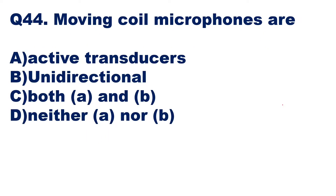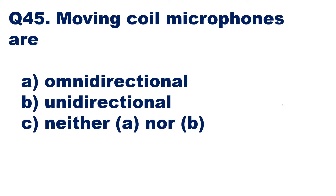Question 44: moving coil microphones are — options are active transducer, unidirectional, both active and unidirectional, or neither. It comes under the category of active transducer which converts sound into electrical energy, so option A is the right answer. Question 45: moving coil microphones are omnidirectional, unidirectional, or neither A nor B. They take sound from all directions, so they are omnidirectional — option A is the right answer.